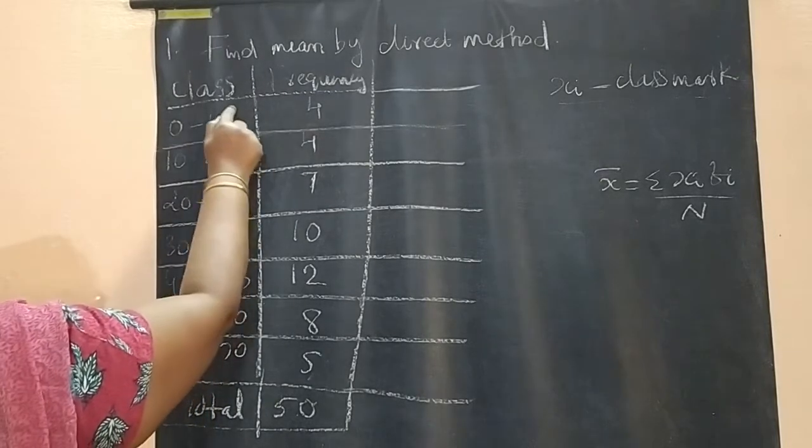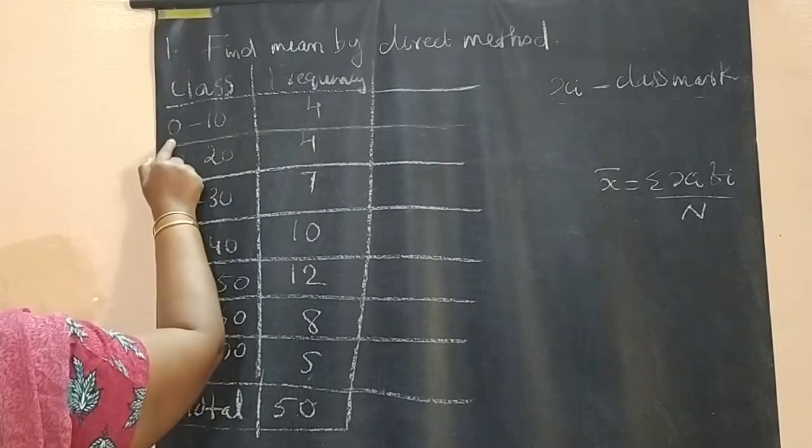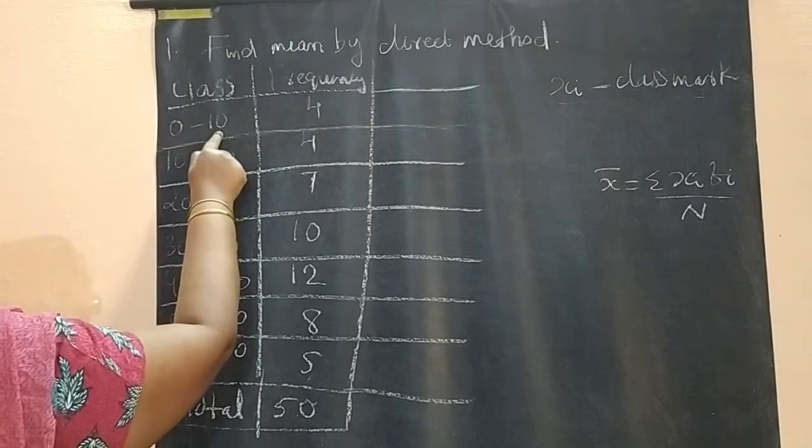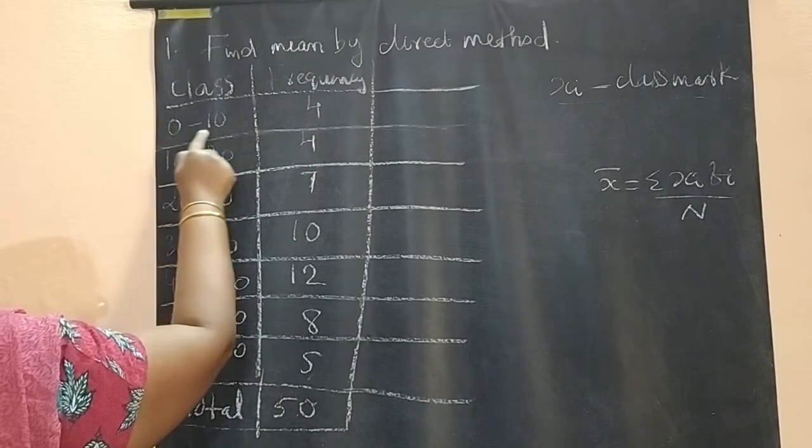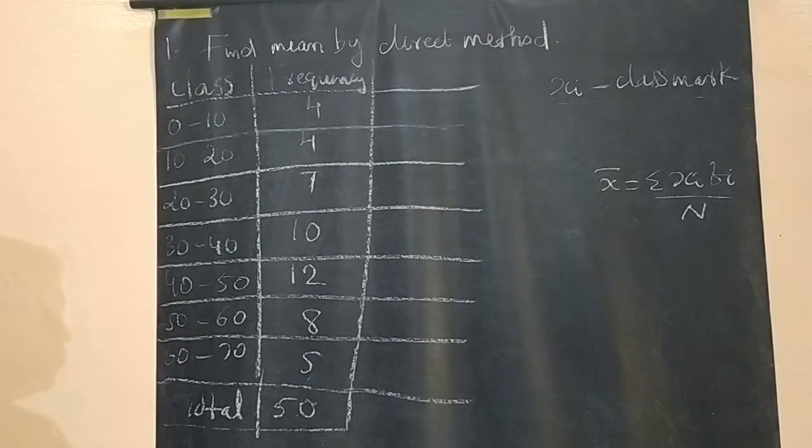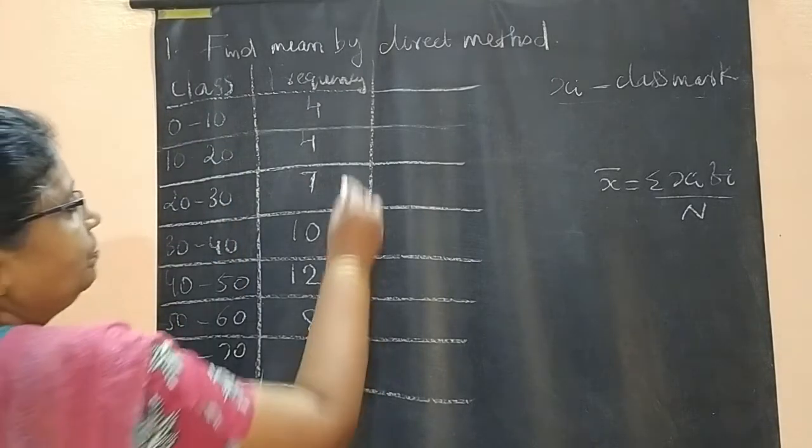For the first class, 0 to 10, lower limit is 0, upper limit is 10. So, (0 + 10) / 2, that is 10 / 2 = 5.